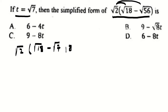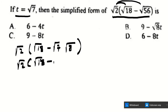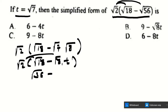When asked to simplify, it's better to decompose. We write radical 2 bracket radical 18 minus radical 8 times t, because radical 7 is t. Multiplying radical 2 through gives radical 36 minus radical 16 times t. Radical 36 is 6, and radical 16 is 4, so the answer is 6 minus 4t, which is found at choice A.